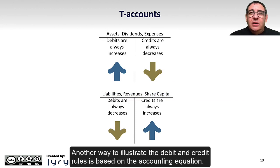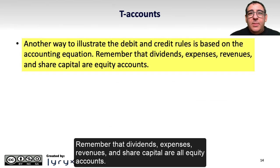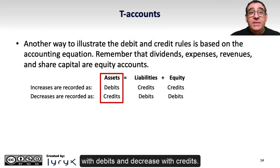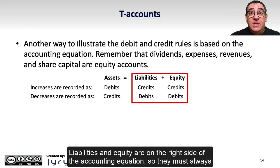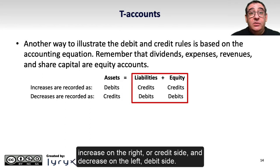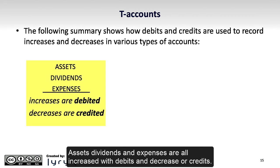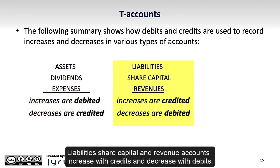Another way to illustrate the debit and credit rules is based on the accounting equation. Remember that dividends, expenses, revenues, and share capital are all equity accounts. Assets are on the left side of the accounting equation and therefore increase with debits and decrease with credits. Liabilities and equity are on the right side of the accounting equation, so they must always increase on the right (credit side) and decrease on the left (debit side). In summary: assets, dividends, and expenses all increase with debits and decrease with credits, while liabilities, share capital, and revenue accounts increase with credits and decrease with debits.